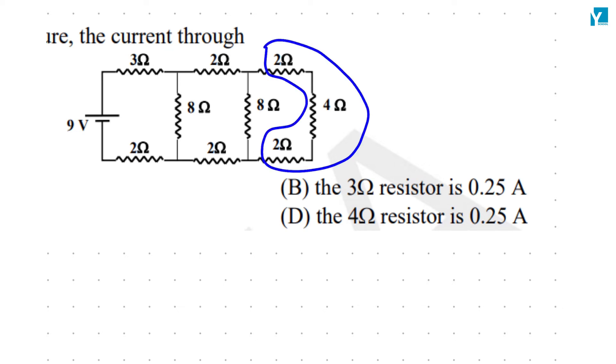2, 4, 2. These three turn out to be 8. And then 8 and 8 combined turn out to be 4.